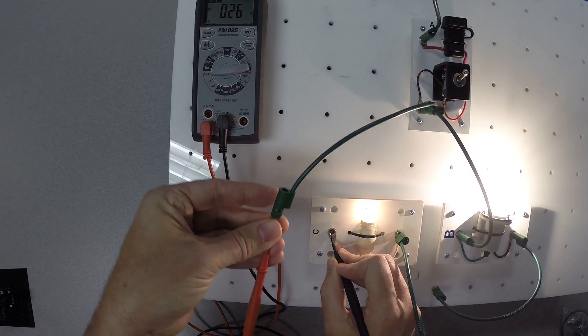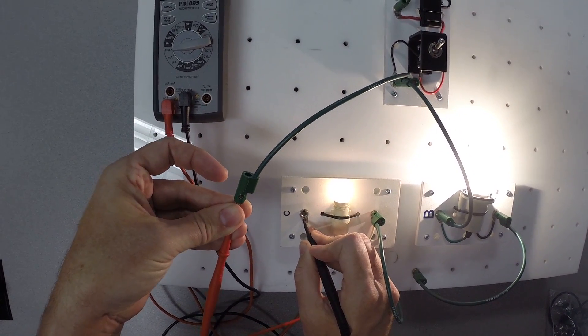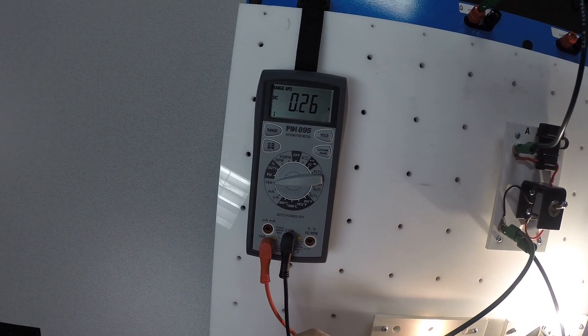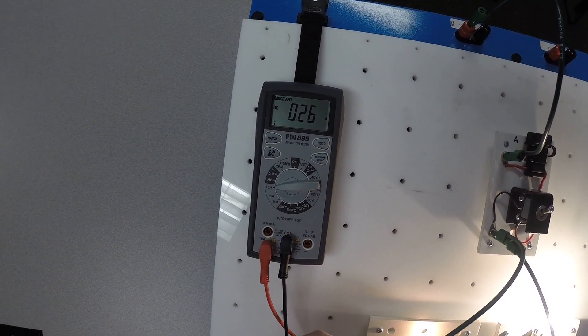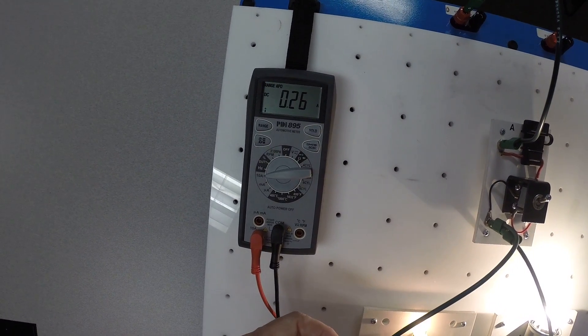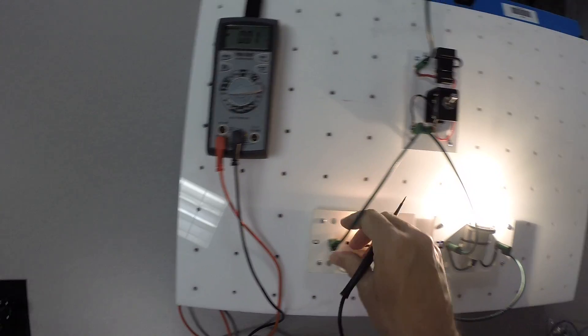So, red lead hooked up to the wire we unplugged, the black lead is hooked up to the spot where we unplugged it, and we look back up here and we have about a quarter of an amp. So, 0.26 amps flowing through this part of the circuit. Remember that number.